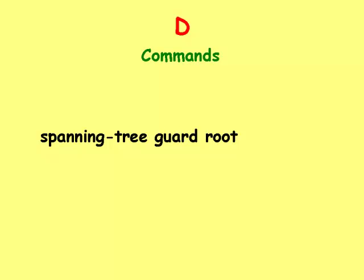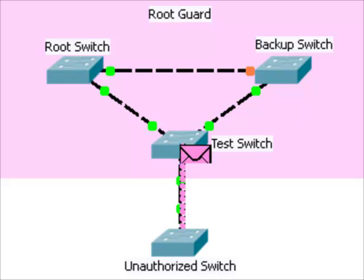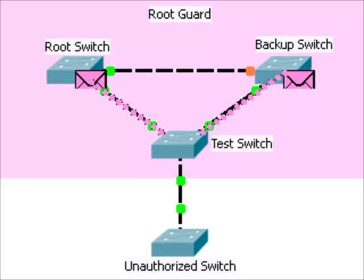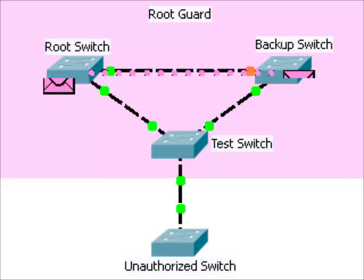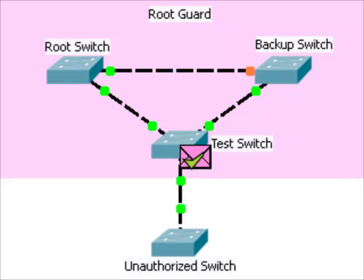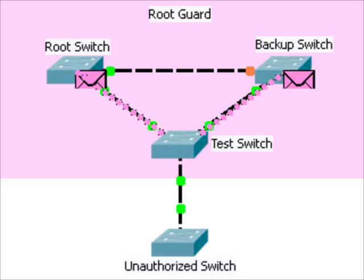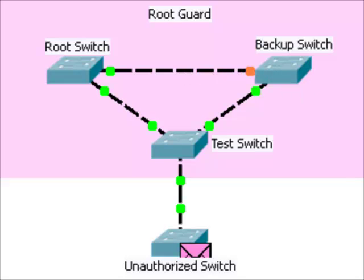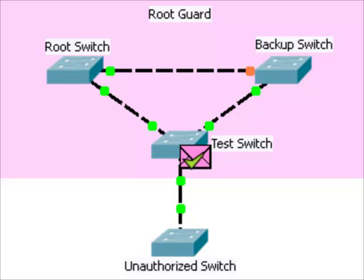The spanning-tree guard root command configures root guard on a specific interface. The root switch is sending superior BPDUs to the backup switch and the test switch. Suppose an unauthorized switch is connected to the test switch with superior BPDUs. The superior BPDUs will force the other switches to accept the unauthorized switch as the root switch and change the spanning tree topology.